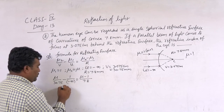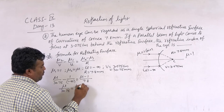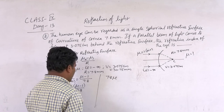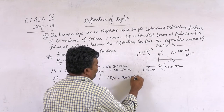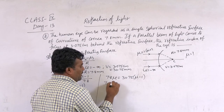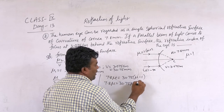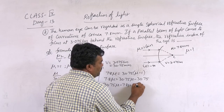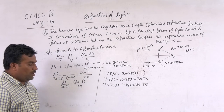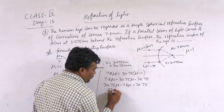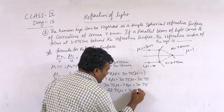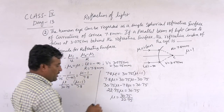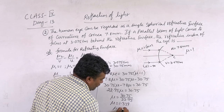Since 1/∞ = 0, we get μ/30.75 = (μ − 1)/7.8. Cross multiplying: 7.8μ = 30.75(μ − 1), so 7.8μ = 30.75μ − 30.75. Rearranging: 30.75μ − 7.8μ = 30.75, giving 22.95μ = 30.75. Therefore μ = 30.75/22.95, and finally μ = 1.34.